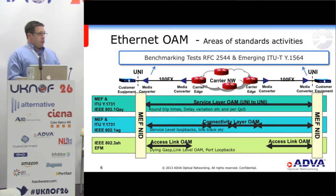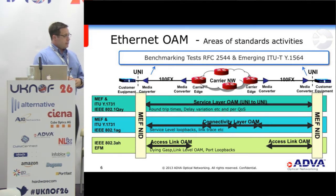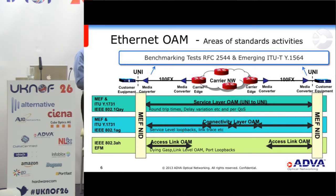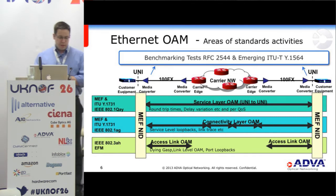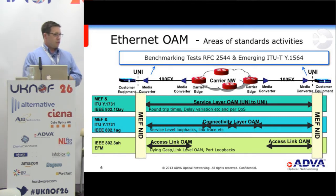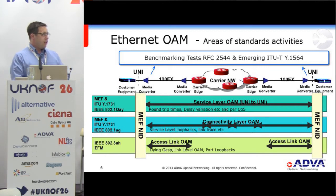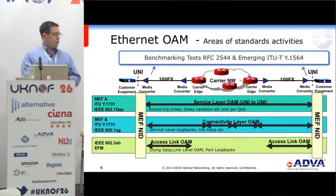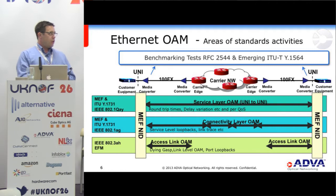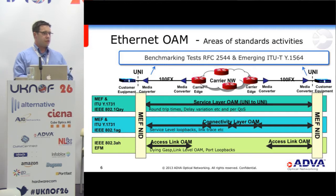So what are those tools? Starting with the very bottom layer — layer 2. We've got some Ethernet standards, one of which is IEEE 802.3AH, otherwise known as EFM, Ethernet First Mile. This is a link-local protocol that runs between two Ethernet ports and is used for some very rudimentary OAM tools. If there's a power down on a box, the link partner can send you a dying gasp. You can also do some link-local retrieval of counters and port-level loopbacks.